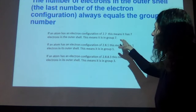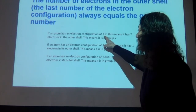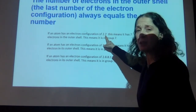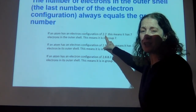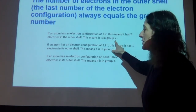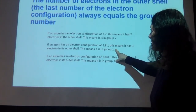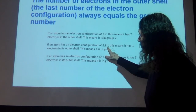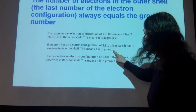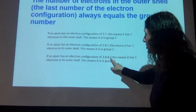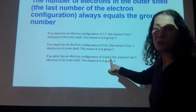So I can use the electron configuration to know which group an element is in. A configuration of 2.7 — the outer shell has seven electrons — means the element is in group seven. A configuration of 2.8.1 means one electron in the outer shell, so it's in group one. And in my last example, the outer shell has three electrons, so it's in group three.